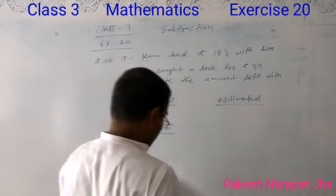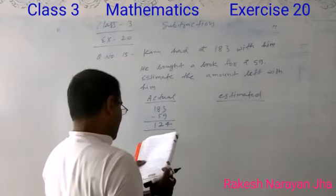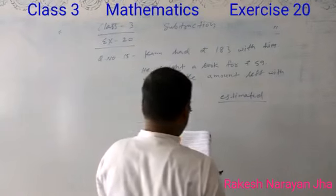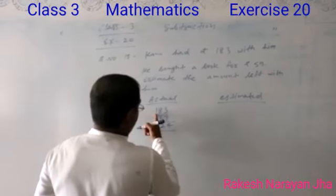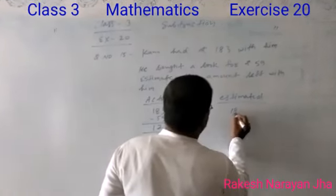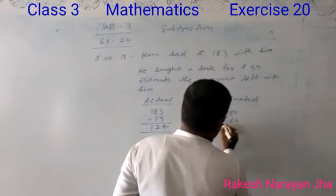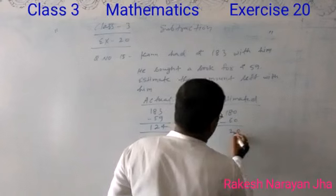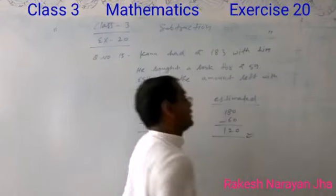Estimated value: In this question hints are given to round off to up to 10. Therefore I round off 183 to 180 and 59 to 60. 180 minus 60 equals 120 is your correct answer.